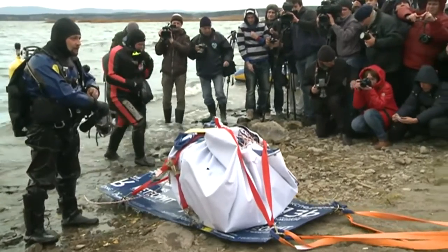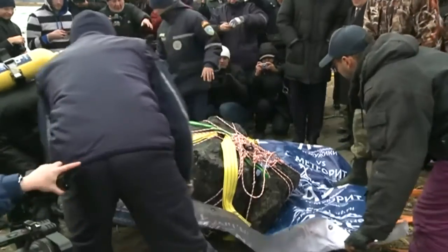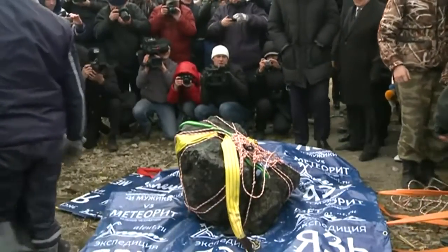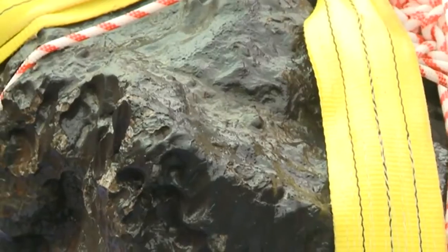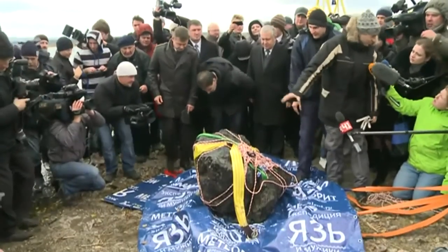This is actually a relatively small piece. The largest piece that was recovered was maybe half a meter in size. It was actually at the bottom of a lake. This is what we would refer to as an ordinary chondrite, which is unsurprisingly a fairly ordinary meteorite. It's the most common type of meteorite that falls on the earth. About 80 percent of all meteorites fall into this category.